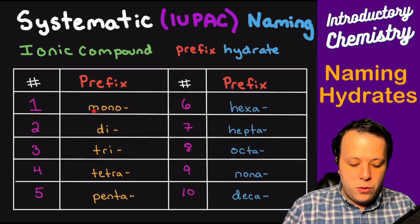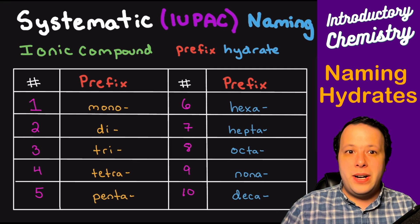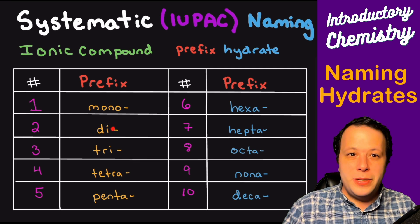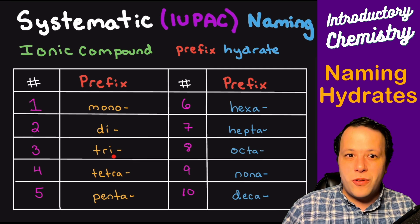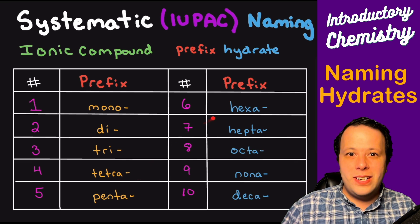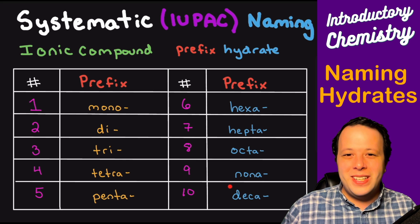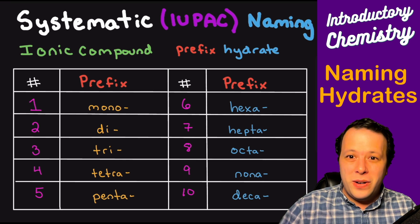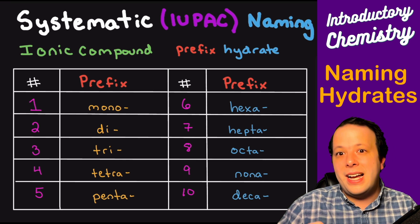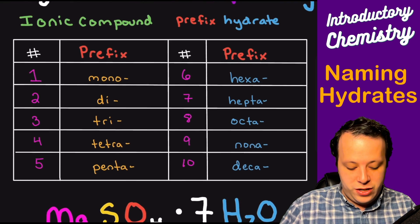So if I have like one water, I'll put monohydrate. I have two waters, I'll put dihydrate, three would be trihydrate, tetrahydrate, pentahydrate, hexa, hepta, octa, nona, and deca. So each one of those are going to tell you exactly the number that you have in your structure.